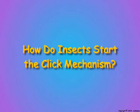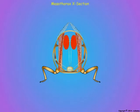This scene will describe how an insect at rest starts the click mechanism. As in the previous scenes, the actions will be presented as exaggerated and slowly in sequence so they can be easily followed.